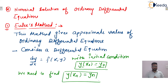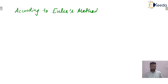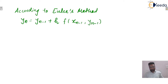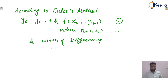What is Euler's method? According to Euler's method, the value of yₙ is given by: yₙ = yₙ₋₁ + h · f(xₙ₋₁, yₙ₋₁). Let us call this equation 1, where n = 1, 2, 3 and so on. Here, h is the interval size, or we can say the width of differencing.